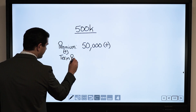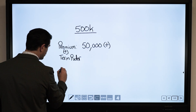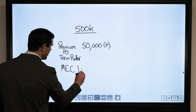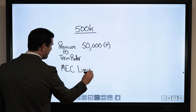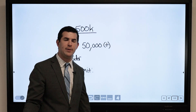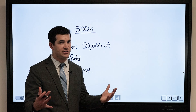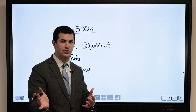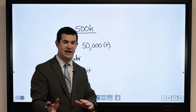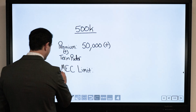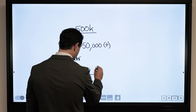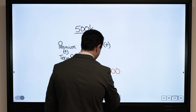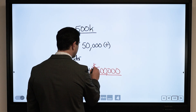The purpose of the term rider was to ensure we had a MEC limit. The MEC limit is the IRS limit that regulates the maximum amount of money we can pay into a policy per year and still have the IRS consider it life insurance, retaining the tax advantages. If you violate that and trigger a MEC, your cash value loses the tax benefits — it grows tax deferred, but any gains are taxable upon accessing them.